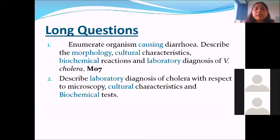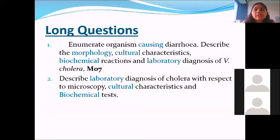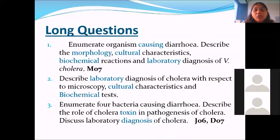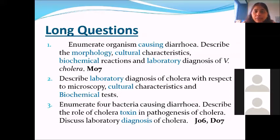Describe the lab diagnosis of cholera with respect to the same headings — microscopy, cultural characteristics, and biochemical tests. Here, all six marks are asked only for lab diagnosis, and there are three headings, so probably two marks each. Then enumerate four bacteria causing diarrhea, describe the role of cholera toxin in pathogenesis of cholera, and discuss lab diagnosis. So three headings, you get two marks each, but in earlier questions only lab diagnosis was to be written for six marks, and in this question you may just write it for two marks — so accordingly you have to tweak the answer.